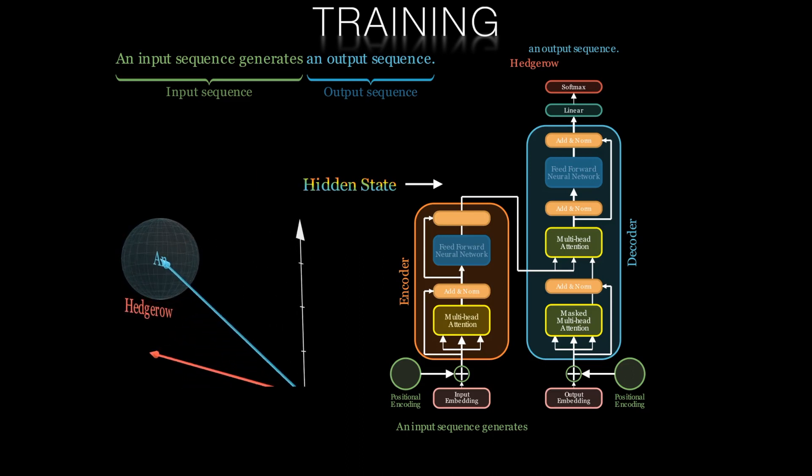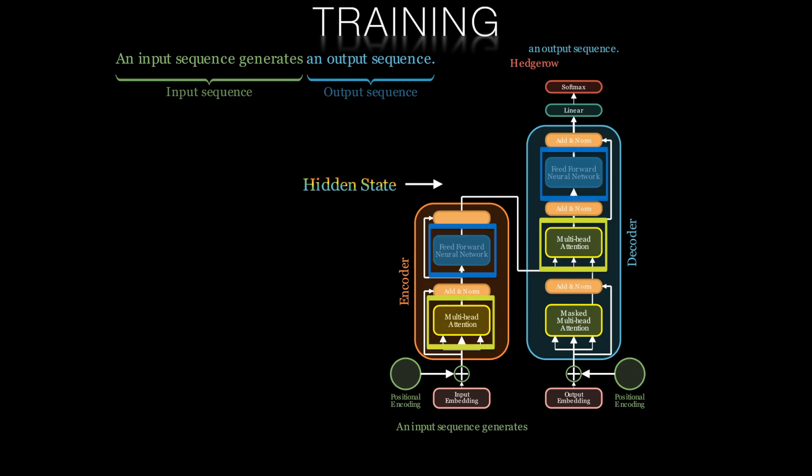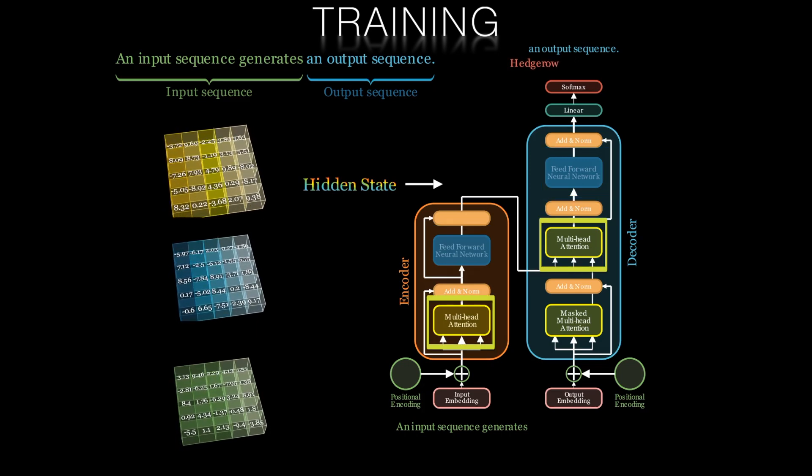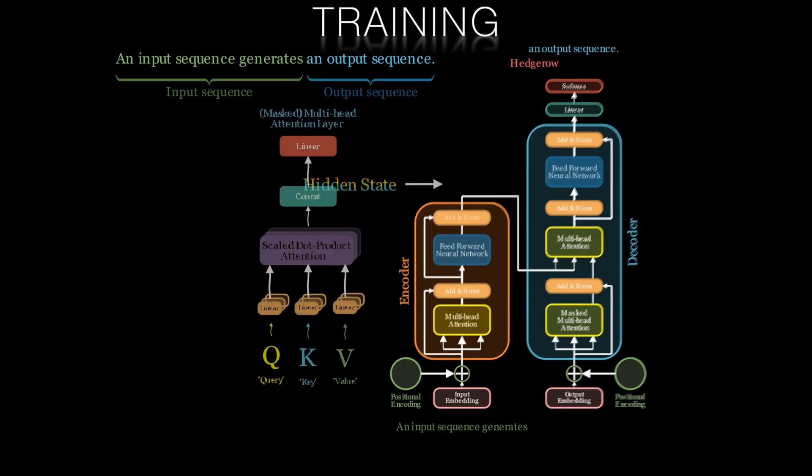After this forward pass through the transformer, we can use back propagation to update the trainable parameters in the encoder and the decoder. This includes the weights and biases in our feed forward neural networks as well as the Q, K and V matrices in our attention modules.